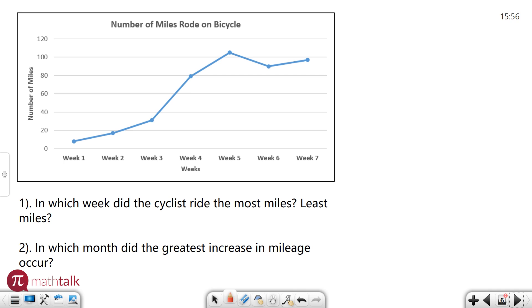So let's look at our questions. Question one says in which week did the cyclist ride the most miles and then also the least miles. So it's a two-part question. The most miles, the easy way to look at this is, well, which week has the dot that's the highest up. In this case it's very easy to see it's this one. It's the highest number, which is week five.